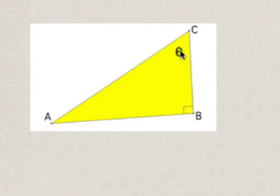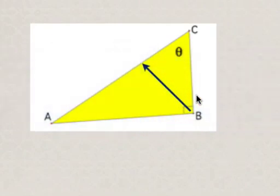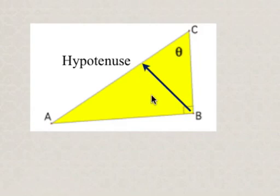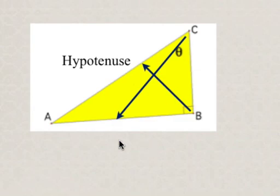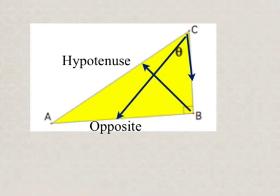If you're asked to indicate the sides according to the various angles, angle C is the marked angle here. You can always identify the hypotenuse because that is the side opposite the right angle, so our hypotenuse is side AC. For the opposite side from angle C, it's going to be side AB. Adjacent means the side next to the angle, and so the side next to angle C is side BC.